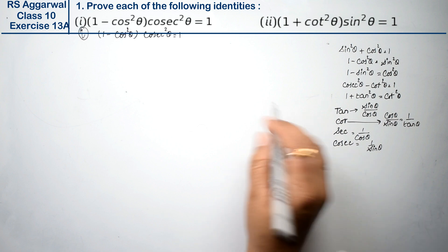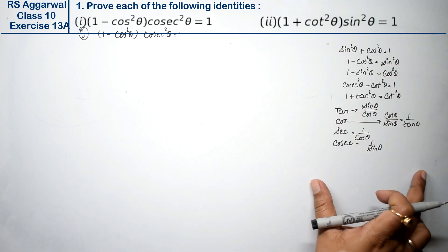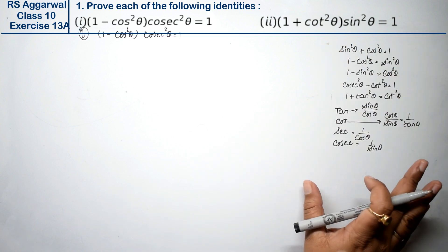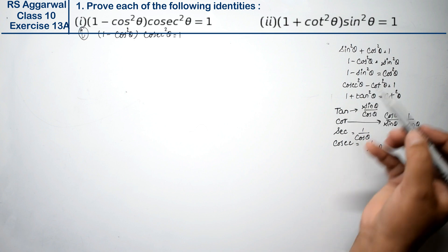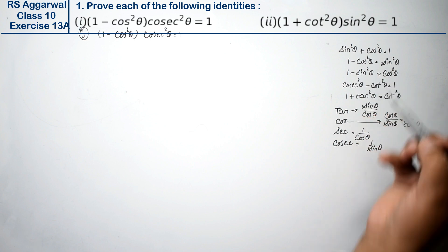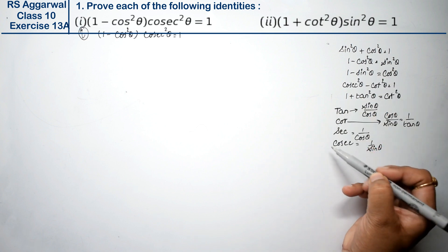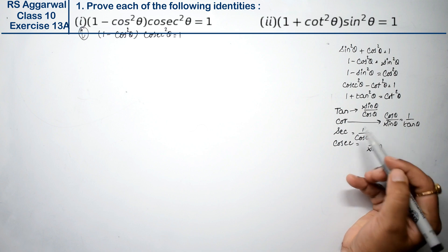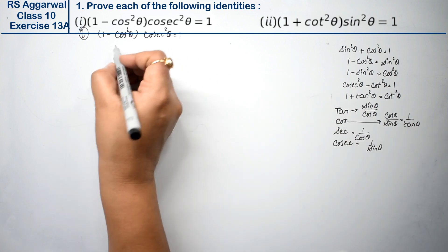We will start the chapter. This is only the introductory part. We will always either apply the identities, give the values, or transfer and change the values into smaller terms.